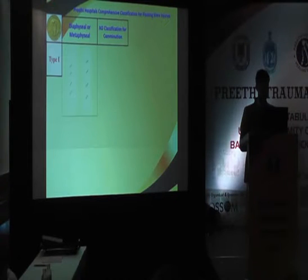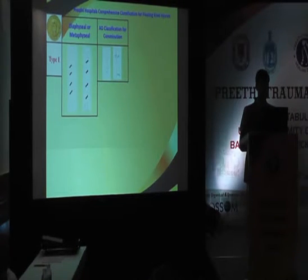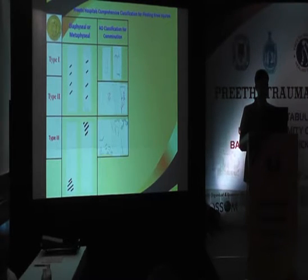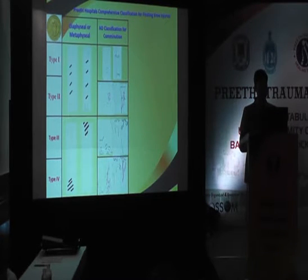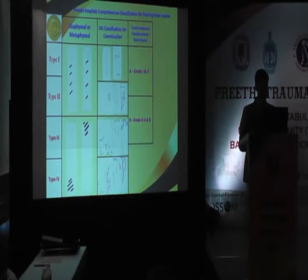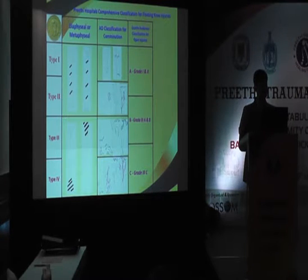This is the pre-K hospital comprehensive classification for floating knee injuries. Type 1 is diaphyseal fractures — AO simple type with no comminution. Type 2 are diaphyseal fractures with severe comminution and segmental involvement. Type 3 are metaphyseal fractures with A1, B1, and C1 type injuries. Type 4 are metaphyseal articular fractures — A2, B2, and complex C3 types. The classification also includes Gustilo-Anderson grading: Grade A as 1 and 2 for early total care; Grade B as 3A and 3B needing multiple debridements and skin cover; and Grade C for neurovascular involvement. Modifiers M1, M2, and M3 were discussed earlier.